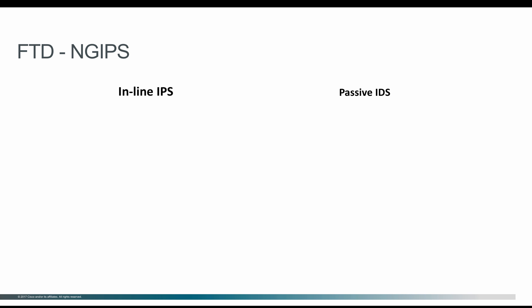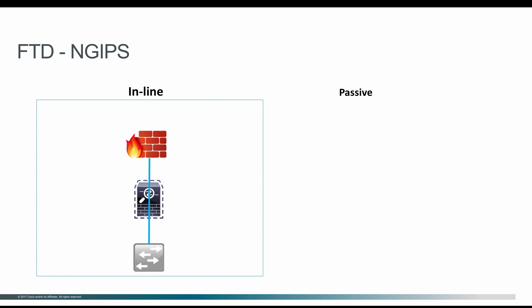As we have already seen in part one of this series, when you deploy the FTD in NG IPS you have two options: deploying it as inline IPS or passive. When you deploy it as passive, it acts as an IDS. Let's go a little deeper and see the differences between inline and passive mode.